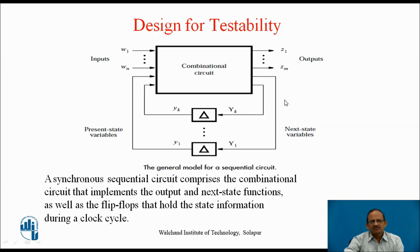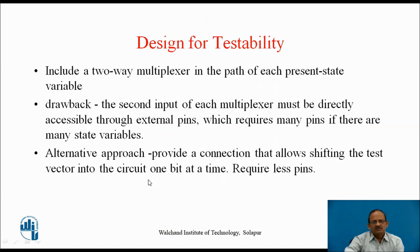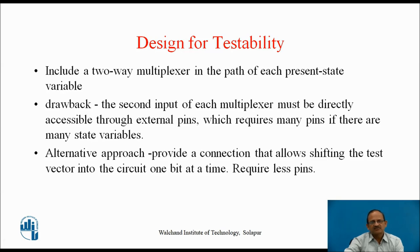The problem is providing these present state variables. One possible solution is to include a two-way multiplexer in the path of each of these present state variables, where one of the inputs will be the present state variable and the other input will be an external input. But the problem here is that the second input of each multiplexer must be directly accessible through external pins, which requires many pins if there are many state variables. So that is not a good solution.